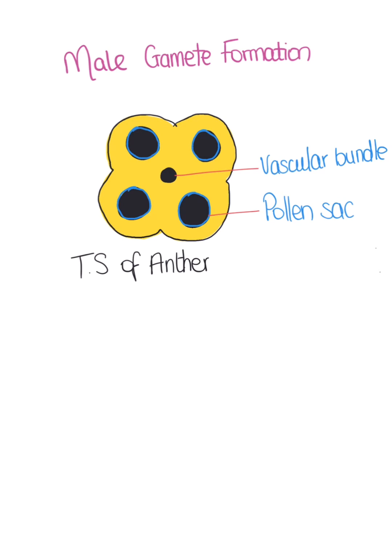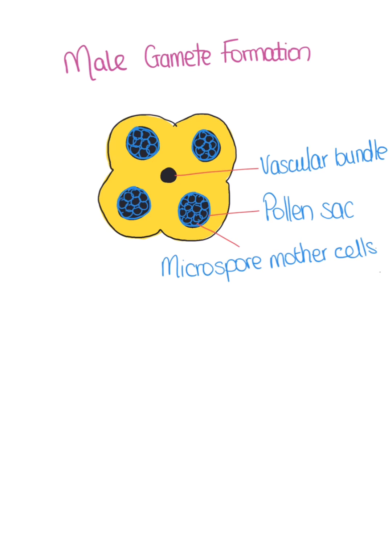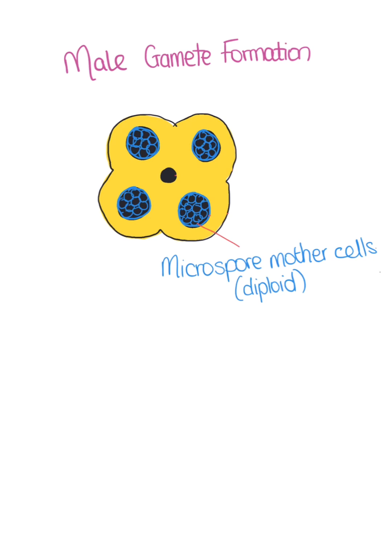Inside each of the pollen sacs there are numerous microspore mother cells. These microspore mother cells are diploid cells. During gamete formation, the microspore mother cells divide by meiosis to form a cluster of four haploid cells.